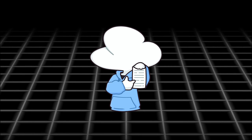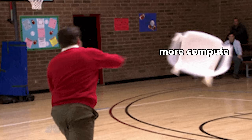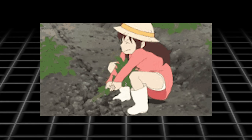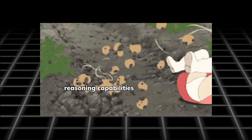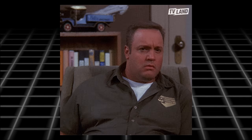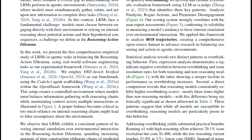To address all these problems, you either throw more compute at it or remove the root cause of the problem, which is the reasoning capabilities. And obviously the latter doesn't really make sense, because it's like saying if you don't have a brain, overthinking wouldn't be a problem. The paper did show that reasoning models tend to overthink almost three times more than non-reasoning ones, so there's that.